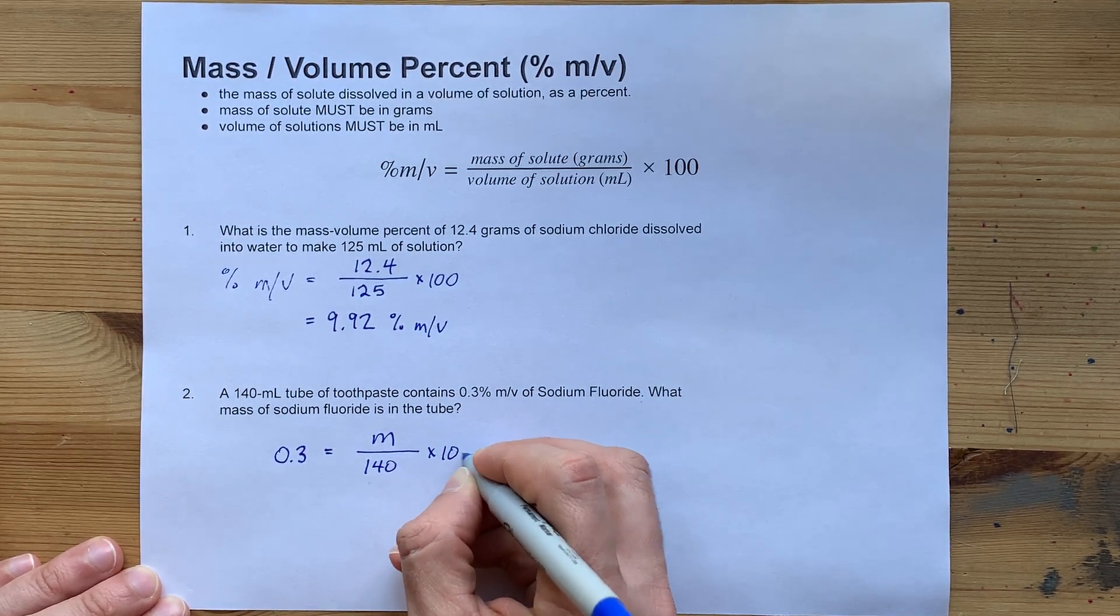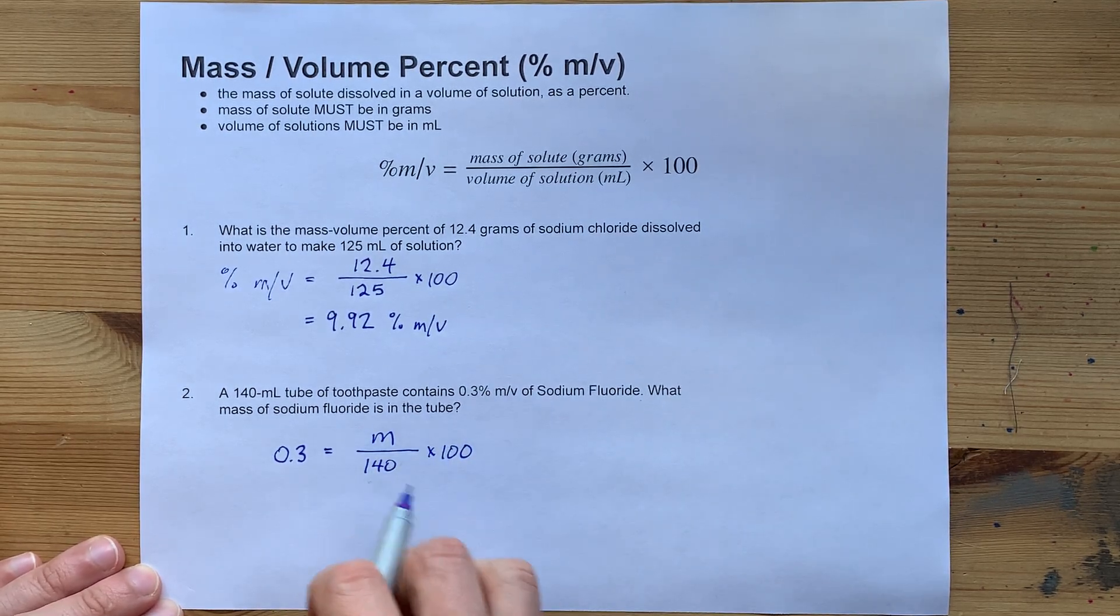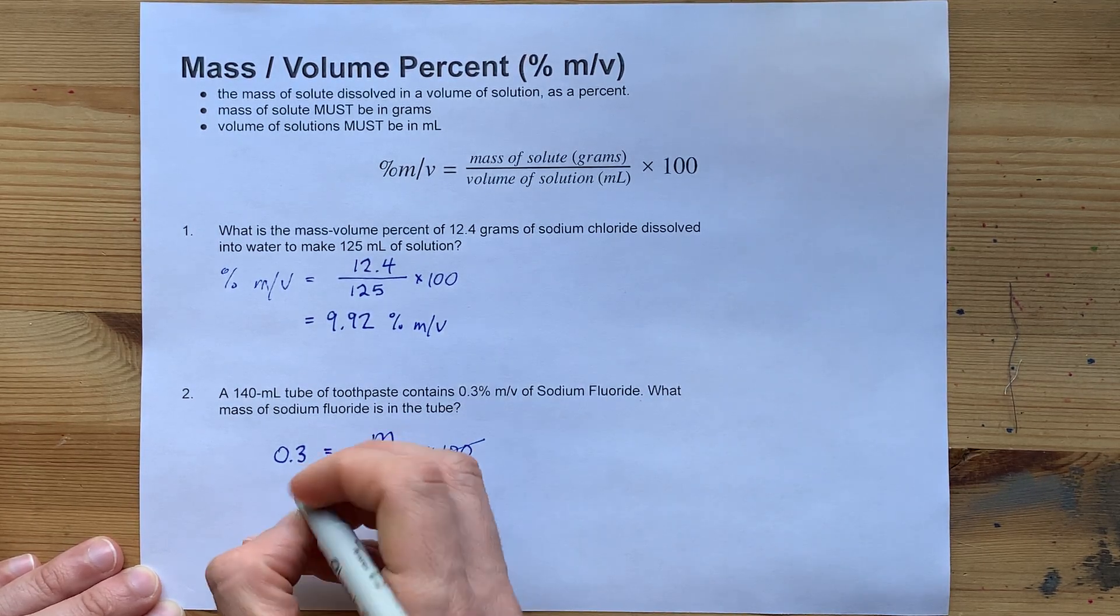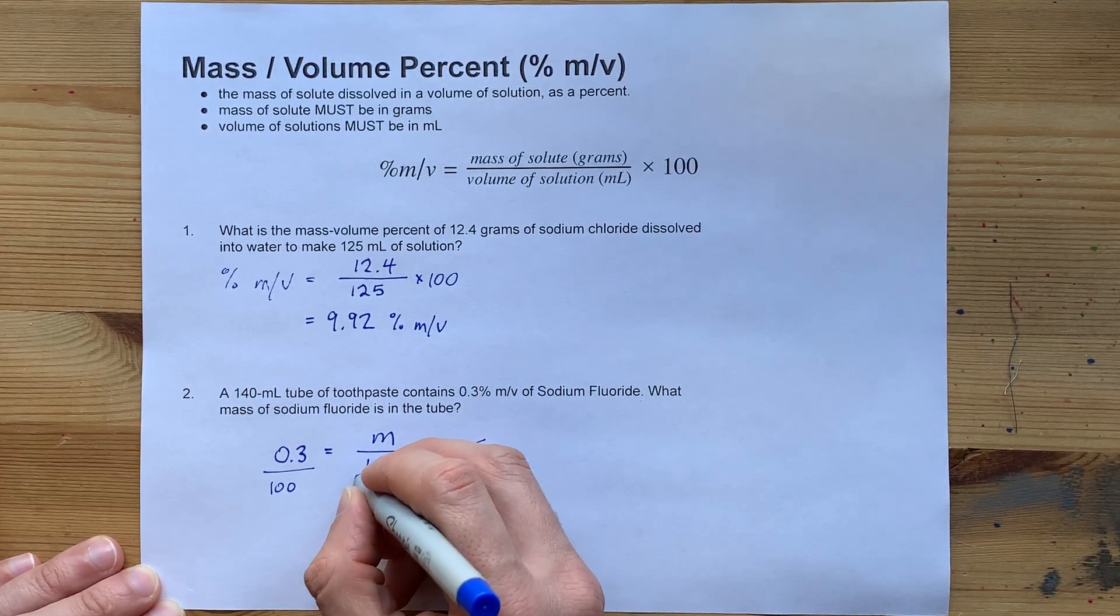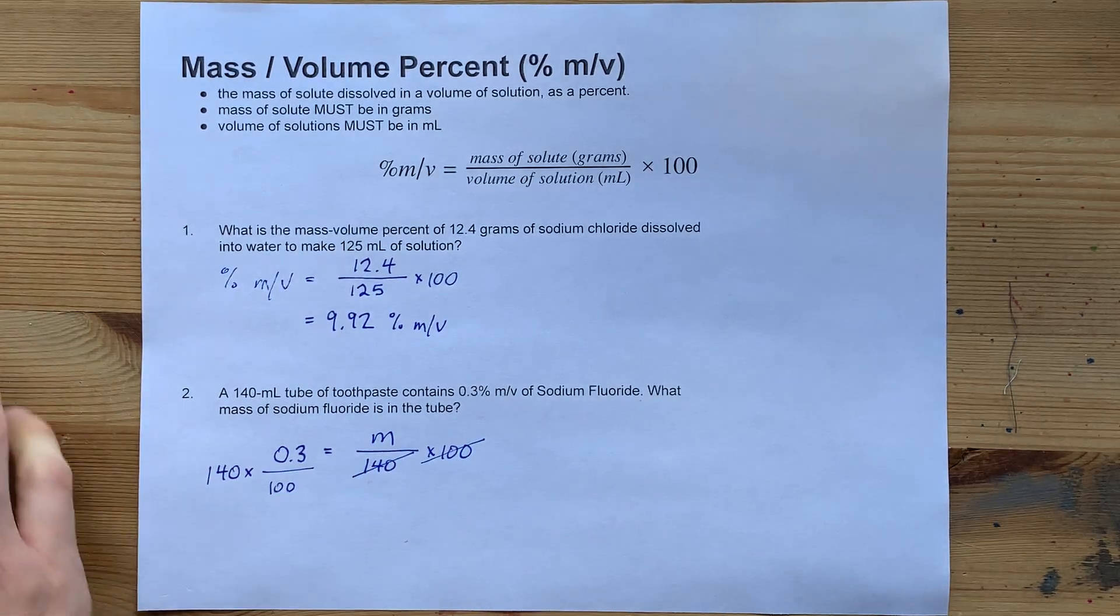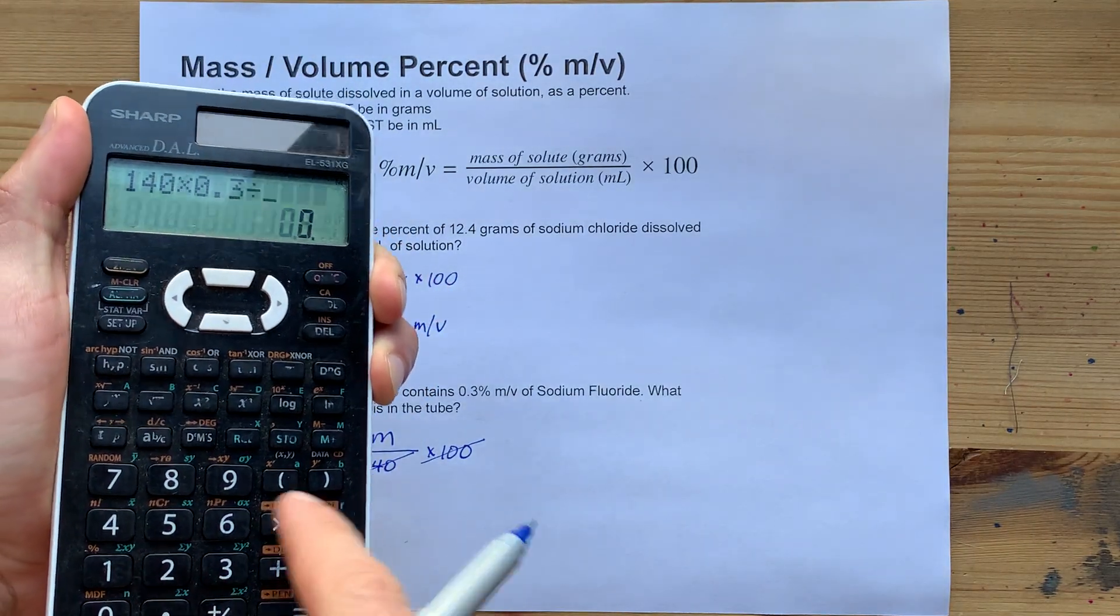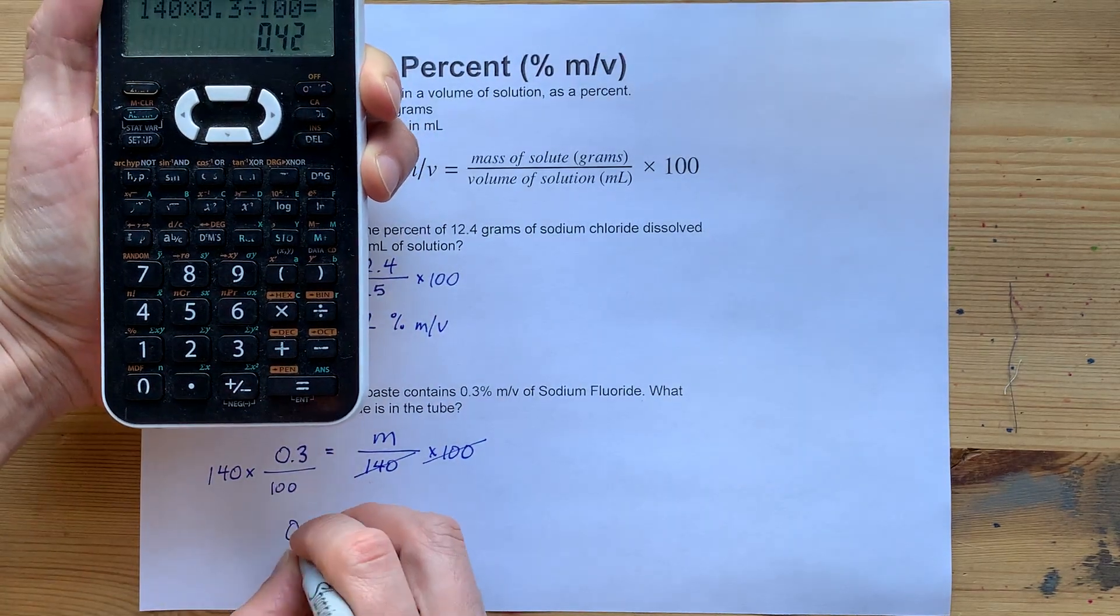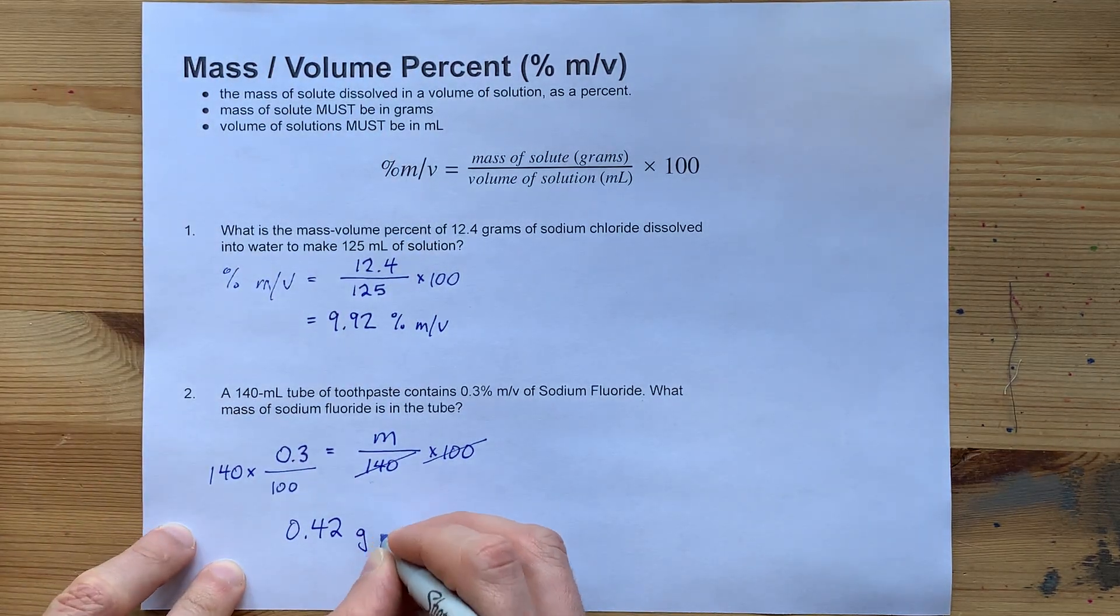I'm going to write my times 100 here, and now, to solve for the mass, I have to undo the things that are on this side of the equation. I can undo timesing by 100 by dividing by 100 on this side, and I can undo dividing by 140 by multiplying 140 on this side. That's going to be 140 times 0.3 divided by an extra 100. That gives me 0.42, and that unit is in grams because it is the mass.